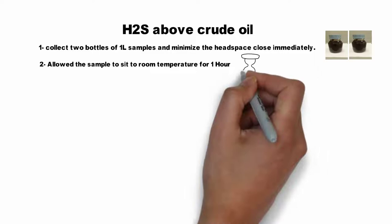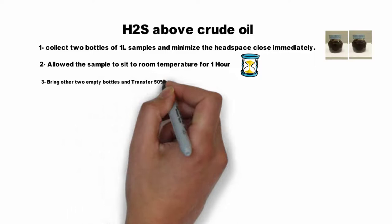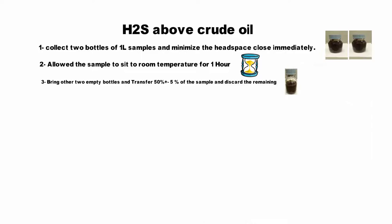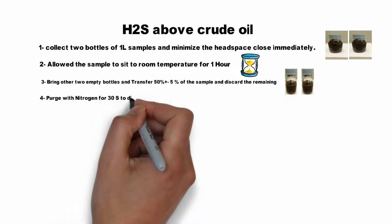Bring two other empty bottles and transfer 50% plus or minus 5% of the sample, then discard the remaining. Purge with nitrogen for 30 seconds to displace the air and water vapor, then close the sample bottle.